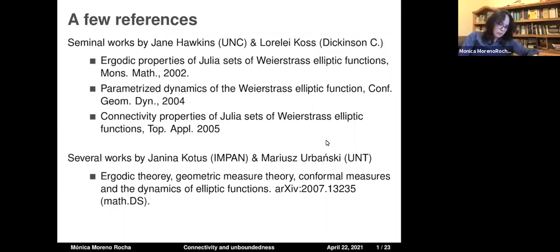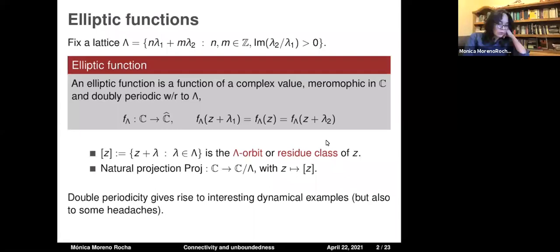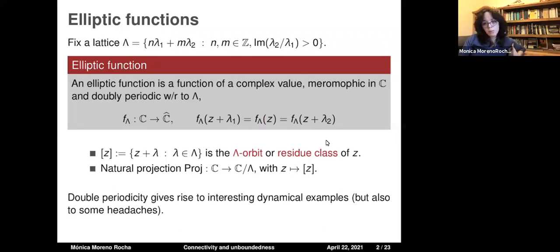Let me start with just the basics of elliptic functions to set up notation, starting with the definition of the lattice. You take all linear combinations of two complex numbers lambda_1 and lambda_2, which we call the generators of the lattice. We only ask that the imaginary part of the quotient is different from zero, and we select it to be positive just to make a choice. These integer linear combinations define an abelian group acting on the plane by translations by elements of the lattice. An elliptic function is essentially a meromorphic function that is doubly periodic with respect to that lattice.